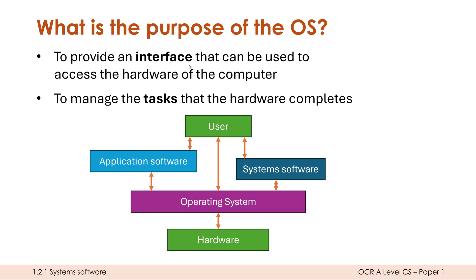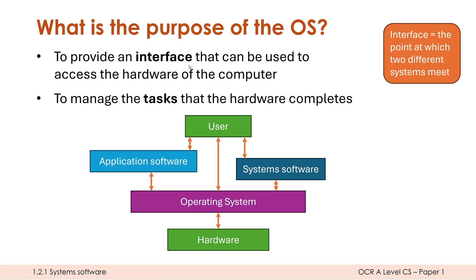The word interface is often used but not really defined — it's quite a vague word. An interface is the point at which two different systems meet. The hardware is one clear system and the software is another, so the OS provides that interface between either the user or other bits of software and the hardware. For example, if I as a user want to open a file, opening a file involves going to secondary storage — I don't do that personally, the OS does that for me. If a program wants to save a file, it has to go via the OS. Things like opening a file, saving a file, or utilizing the CPU are all managed by the OS.